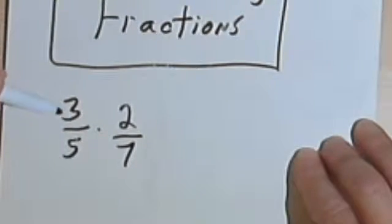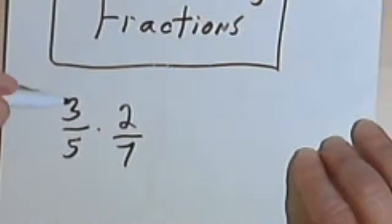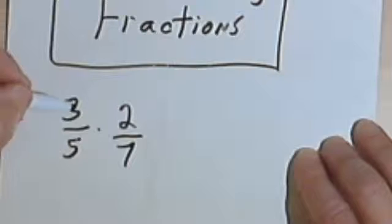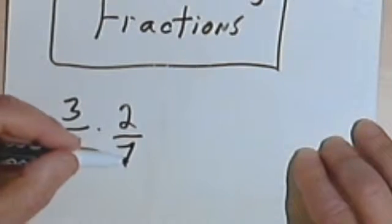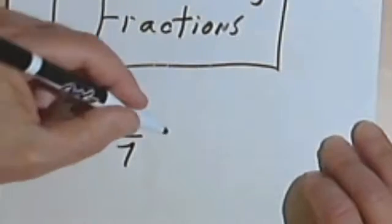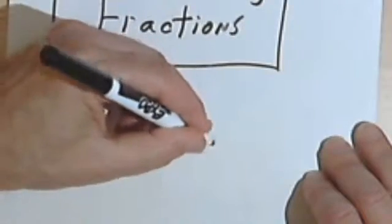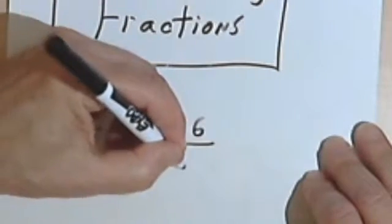The basic rule for multiplying fractions is that you multiply across. In other words, you multiply the numerator times the numerator, and then you multiply the denominator times the denominator. So the numerator times the numerator is 3 times 2, that's going to give me a 6. And for the denominators I have 5 times 7, so that gives me 35.